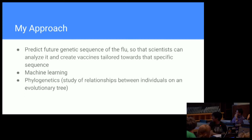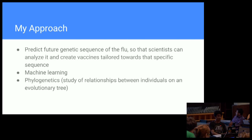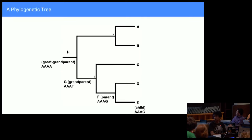This is my approach. I would first predict future genetic sequences of the flu, and scientists could analyze that. I would do that using phylogenetics and machine learning. Phylogenetics is a study of the relationships between individuals on an evolutionary tree. This is pretty much a phylogenetic tree — you've probably seen one of these.